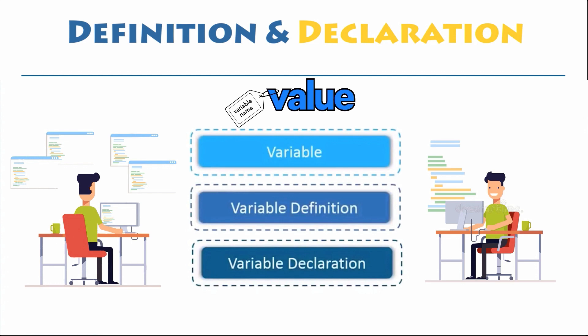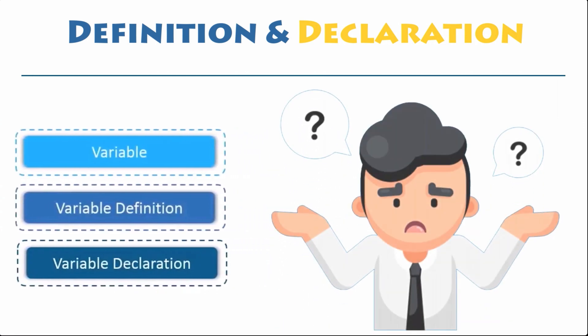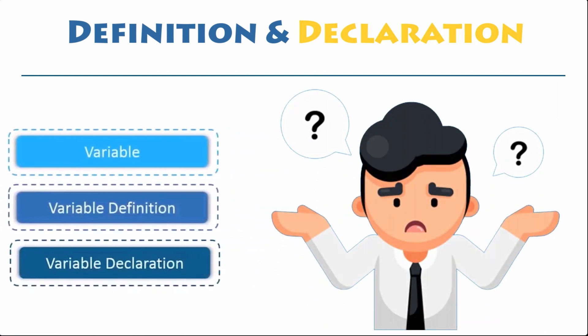Nonetheless, there are certain rules and regulations we have to follow while writing a variable. Let's take a look at the variable definition to understand how we declare a variable in Python.